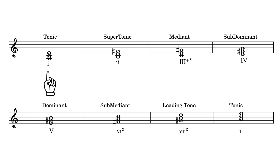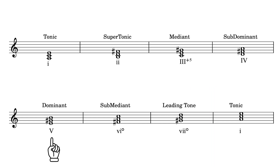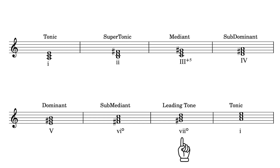In A melodic minor, the tonic is a minor chord. But the supertonic is also minor, because we have that raised F sharp. Then the mediant is augmented, because we have that other raised note — the G becomes G sharp. The subdominant is major, because we've got that F sharp in there. The dominant is also major. The submediant is diminished. The leading tone is also diminished. And then we're back on the tonic. So that is the melodic minor.